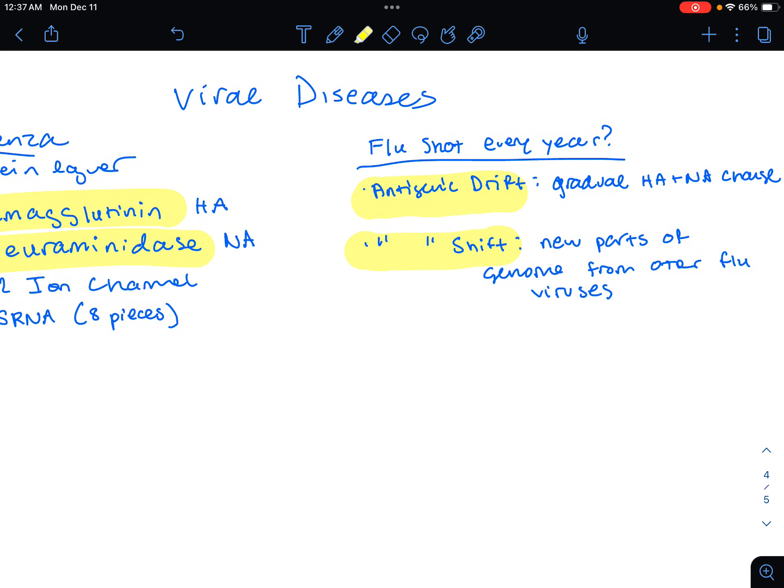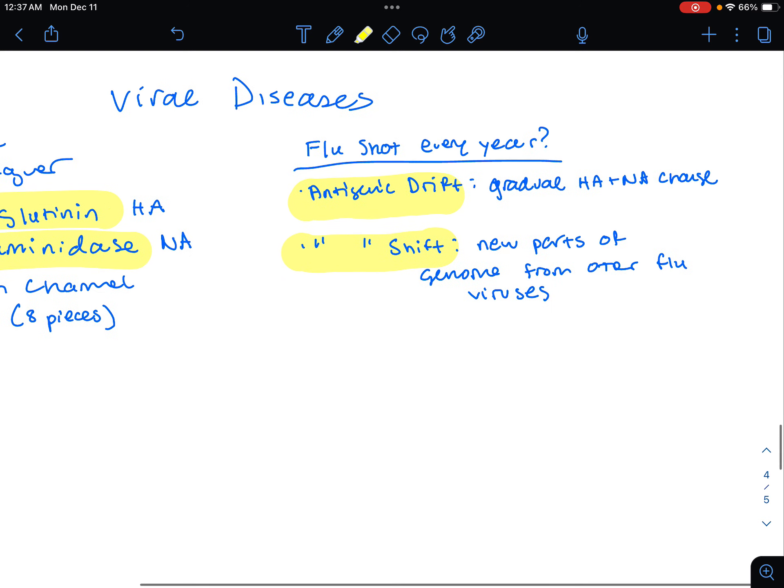Antigenic drift is the notion where repeated mutations will cause a gradual change in HA and NA. If we're going to change those outside lipid layers, that's going to be difficult for our immune system to recognize. That's why we need flu shots due to that antigenic drift. But we also have to worry about the shift that also happens.